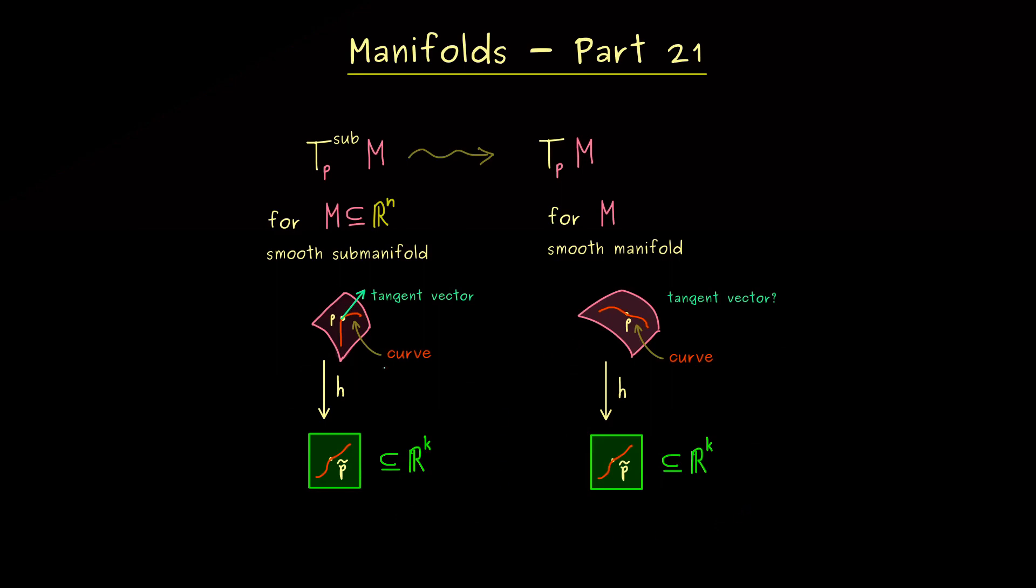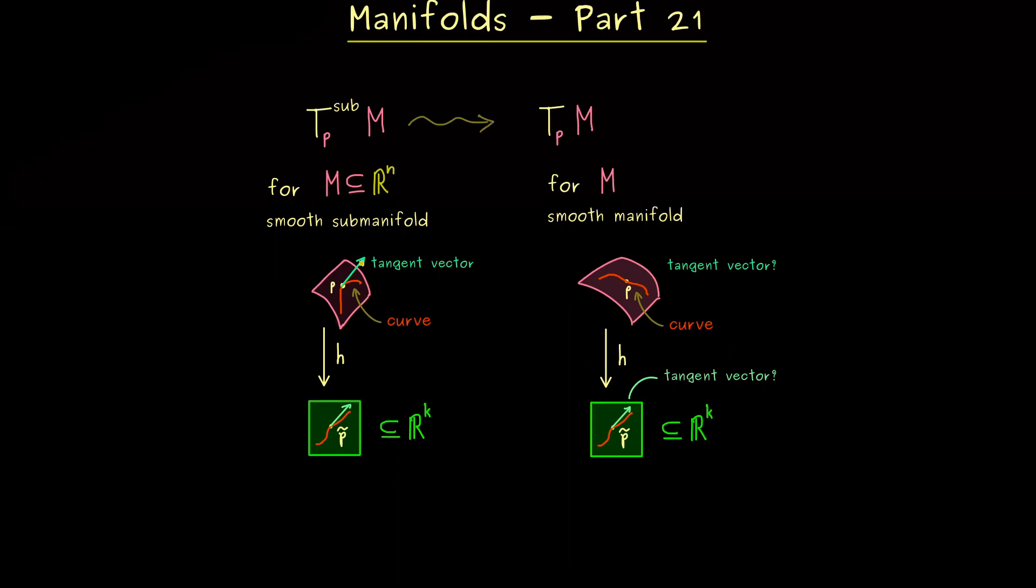Therefore, instead of using the actual tangent vectors, we could also use the ones we find here in R^k. Of course, there we don't have a problem, because also in the abstract version of the manifold such a vector here exists. However, now the correct question is, can we use that as a substitute for the actual tangent vector?